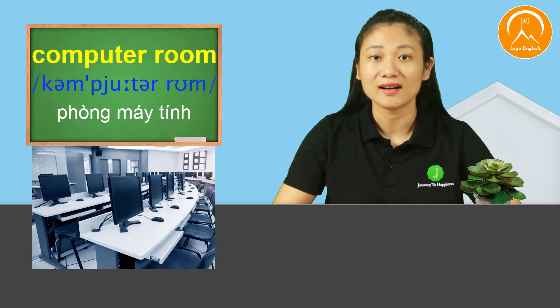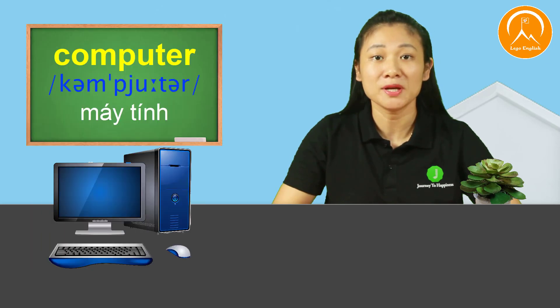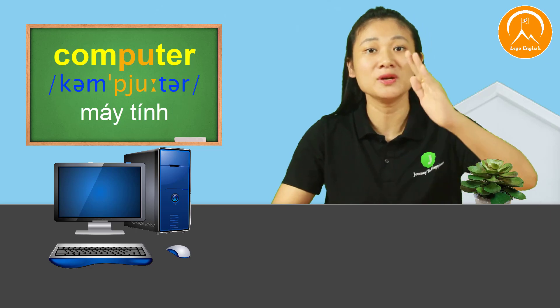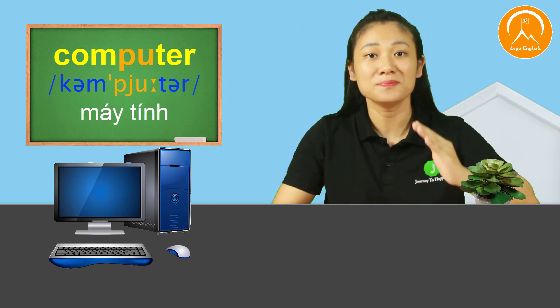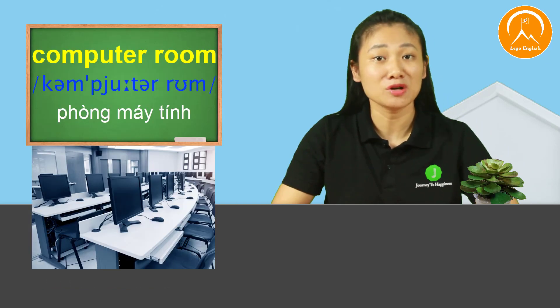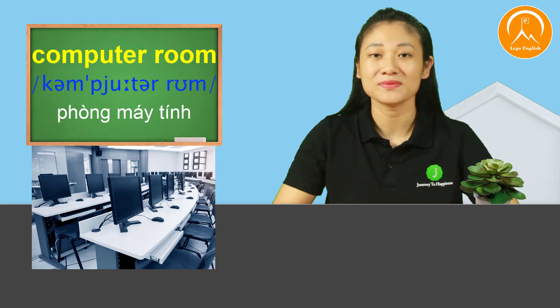Now let's look at more vocabulary from the lesson. The first is 'computer room.' Again. Computer room. The word for computer is 'computer' — stress on the second syllable. And 'room' means a room. Together: computer room. One more time. Computer room.